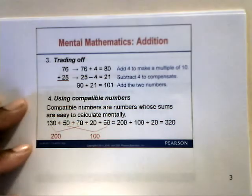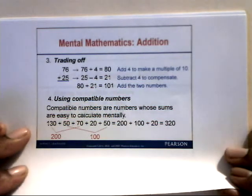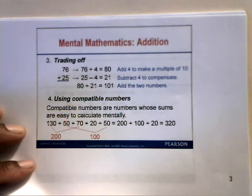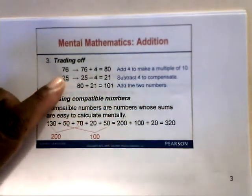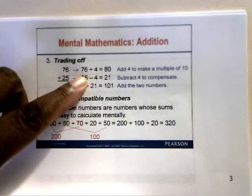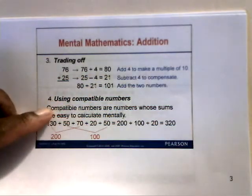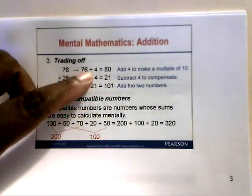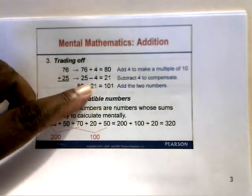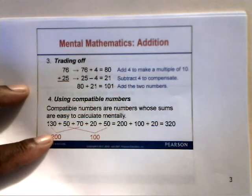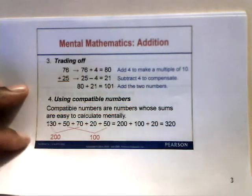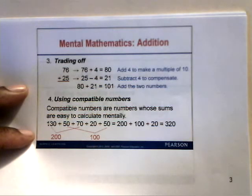The third method is trading off. For 76 plus 25, we make a multiple of 10 by adding 4 to 76, giving us 80. But if we add 4, we trade off by subtracting 4 from 25, which gives us 21. So 80 plus 21 gives us 101. Whatever number you add to the first number to make it a multiple of 10, you subtract that same number from the second.